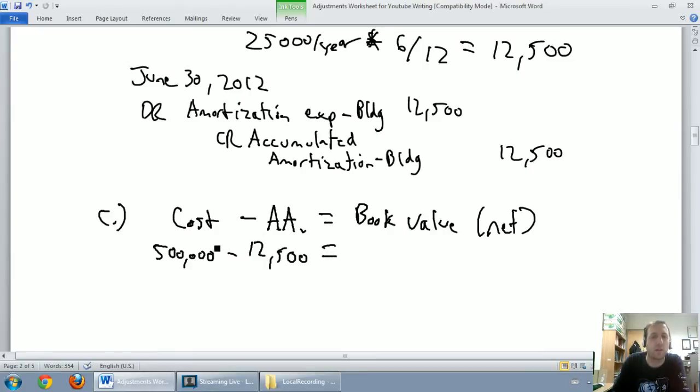Anyway, $500,000, our cost, minus our accumulated amortization, brings us to a book value of $487,500. Our building is worth $487,500 on paper.